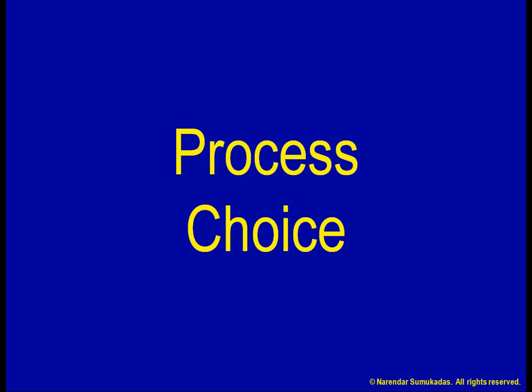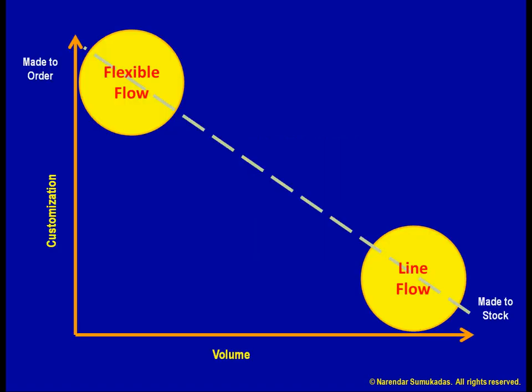The five types of processes we have discussed so far dealt with manufacturing processes. But what about service processes? For that, let us again go back to our basic diagram. Here we can still see the line flow versus flexible flow ends of the diagonal. However, instead of make to stock versus make to order, we can think in terms of a standardized service versus a customized service.